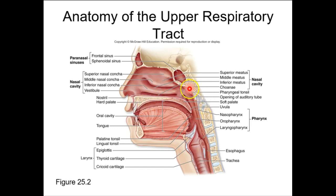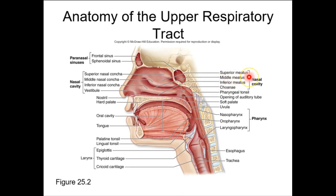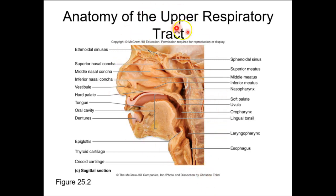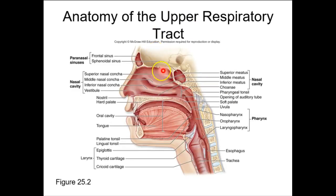You can also see your tonsils on this image — your pharyngeal tonsil is in your nasopharynx, so if you open your mouth and say 'ah,' you cannot see that one. Your palatine tonsil and lingual tonsil are also visible here, as are your frontal sinuses, sphenoidal sinuses, your epiglottis, larynx, and part of your trachea. The esophagus is posterior to the trachea — that's going to be important in just a bit.